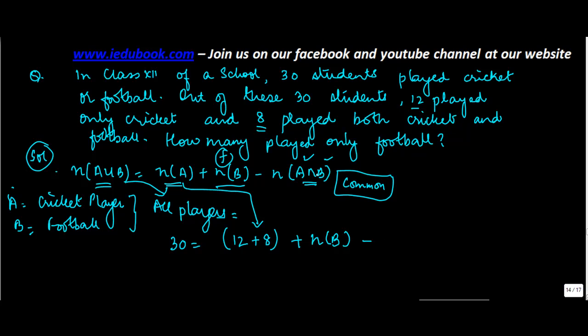Minus n(A∩B) means what? Players who play both cricket and football. And what is that number? That is 8. So now this 8 gets cut off with this. If we find out n(B), this 12 will move to the other side. 30-12 is equal to 18.